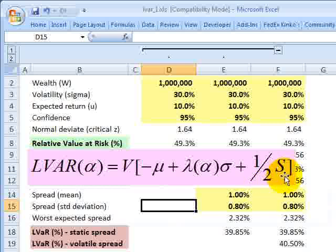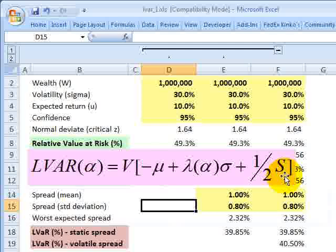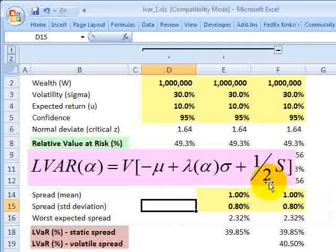Why is it one-half the spread instead of the spread? Because the full spread measures the cost of supplying immediacy for a round trip. That's to buy and then sell, or to sell and then buy the asset. This is only for the sale of the asset, so we only want one-half. We only want a one-way trip.